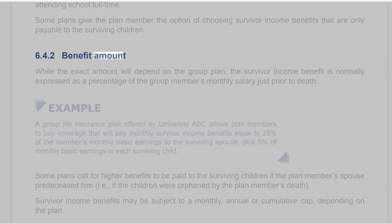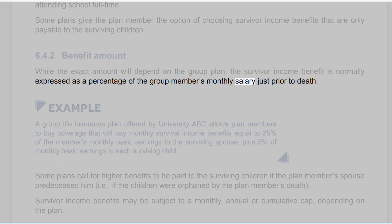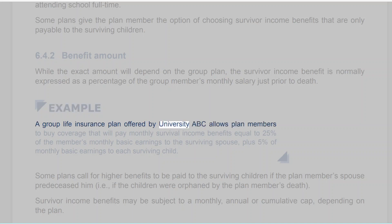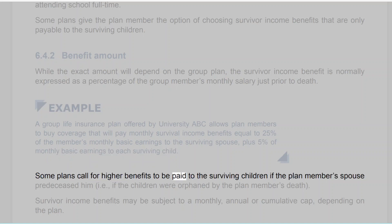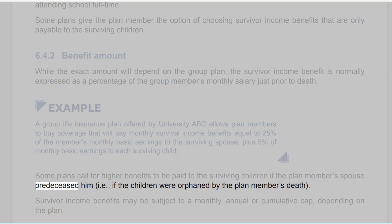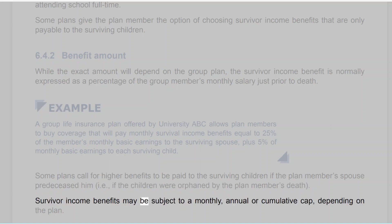6.4.2 Benefit Amount. While the exact amount will depend on the group plan, the survivor income benefit is normally expressed as a percentage of the group member's monthly salary just prior to death. Example: A group life insurance plan offered by University ABC allows plan members to buy coverage that will pay monthly survivor income benefits equal to 25% of the member's monthly basic earnings to the surviving spouse, plus 5% of monthly basic earnings to each surviving child. Some plans call for higher benefits to be paid to surviving children if the plan member's spouse predeceased him. Survivor income benefits may be subject to a monthly, annual or cumulative cap depending on the plan.